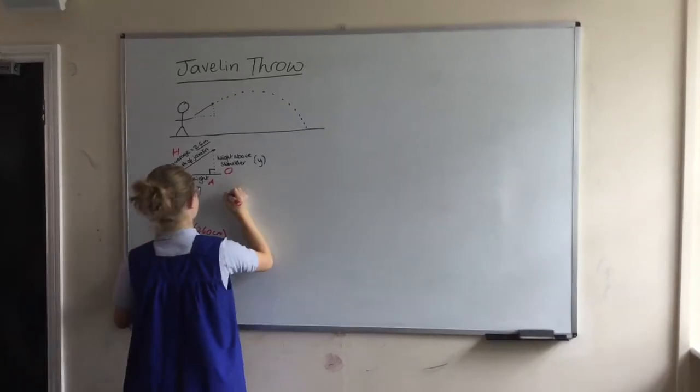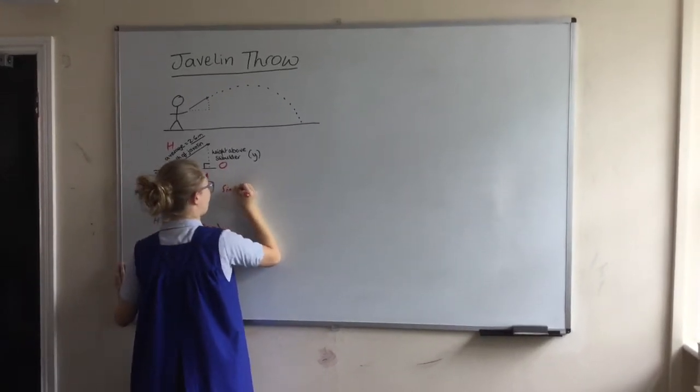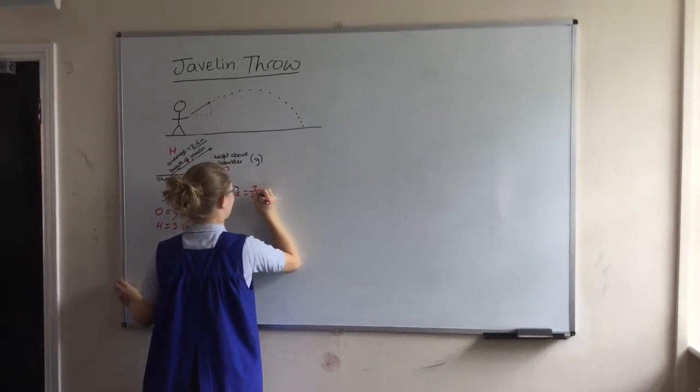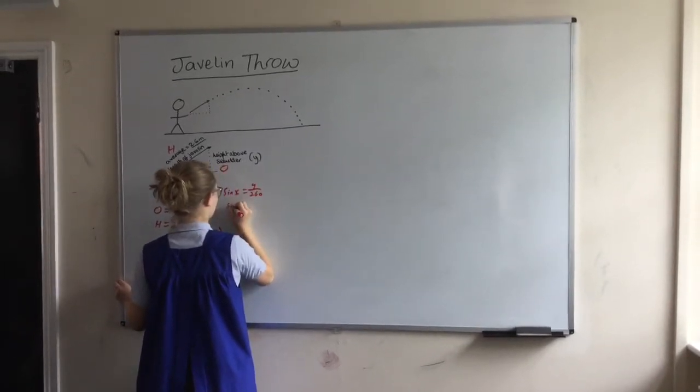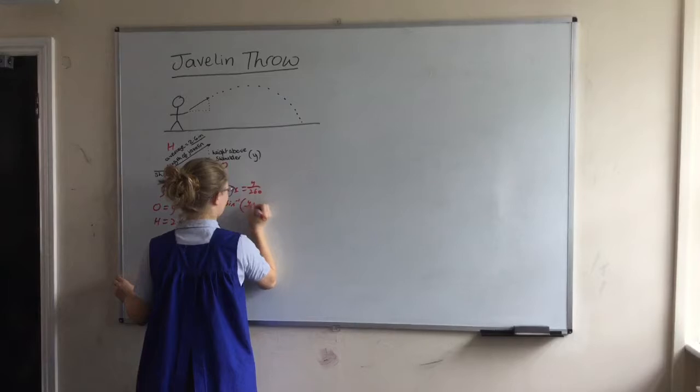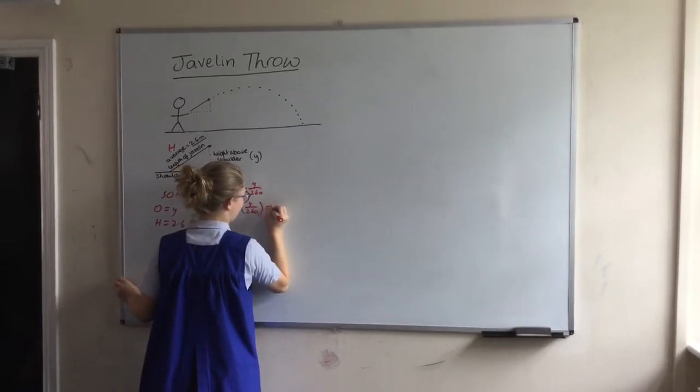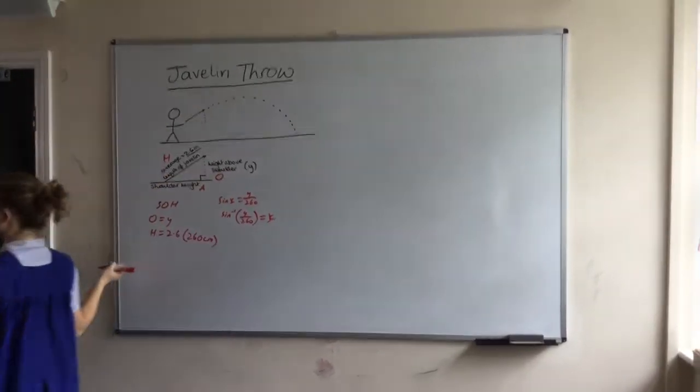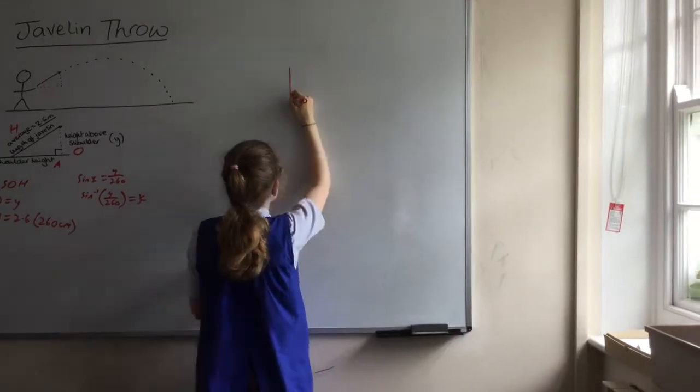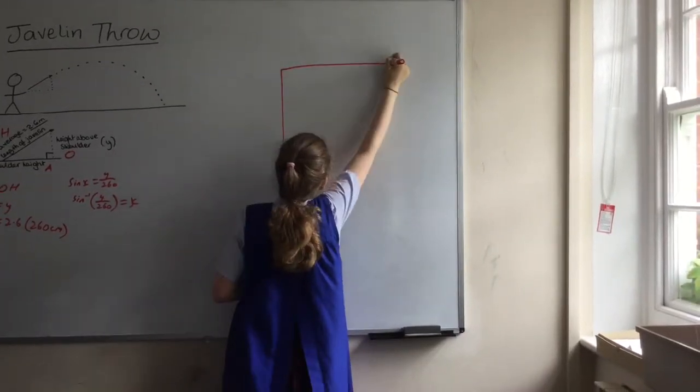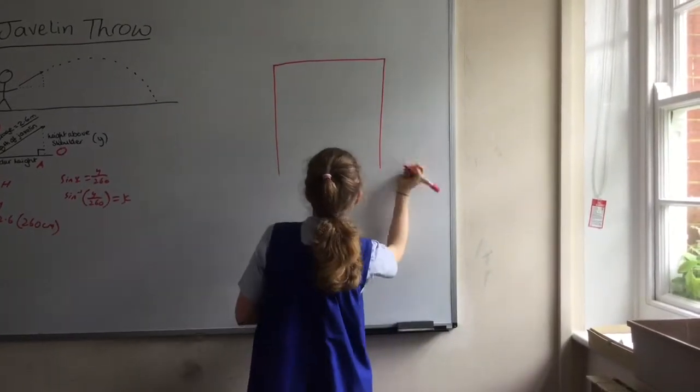Using trigonometry, we used the sine rule and applied its inverse in order to find the perfect angle at which a javelin should be thrown.